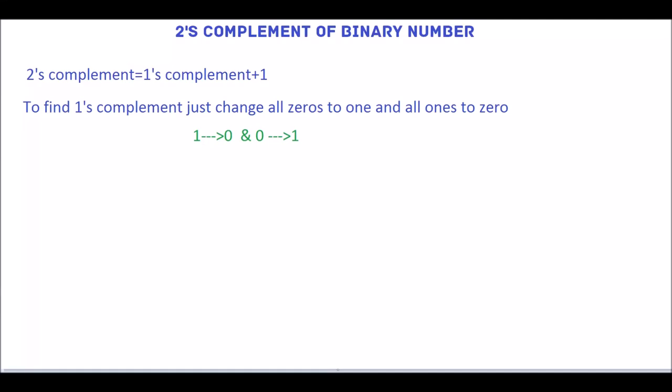In this tutorial, we will see how to represent the binary number in 2's complement form. 2's complement is an addition of 1 with the 1's complement. To find the 1's complement, we have to change all 0's to 1 and all 1's to 0.